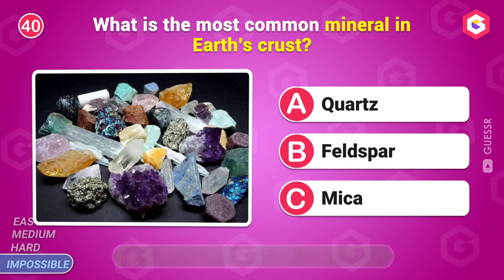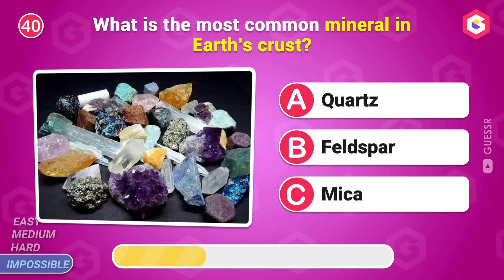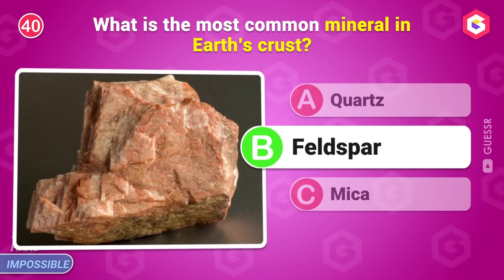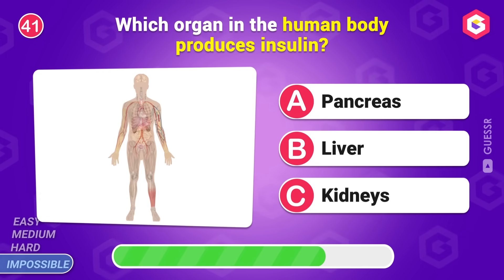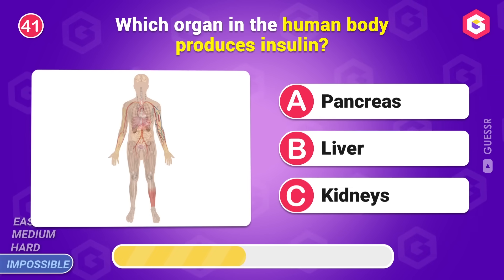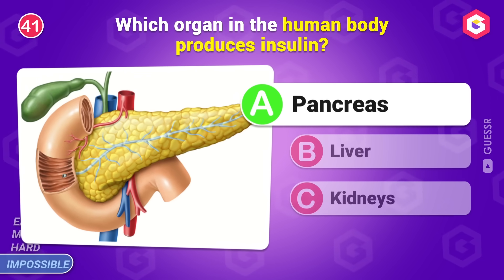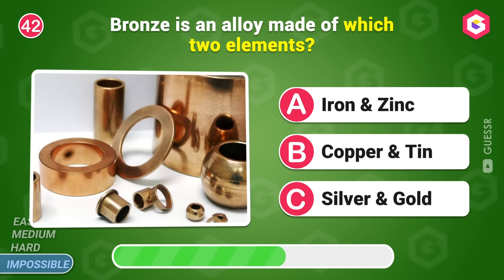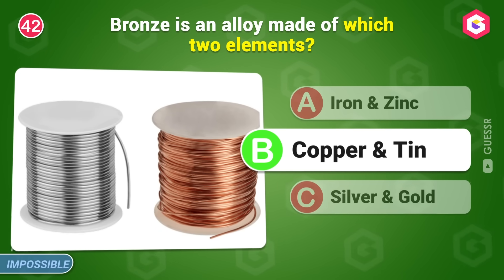What is the most common mineral in Earth's crust? Feldspar. Which organ in the human body produces insulin? Pancreas. Bronze is an alloy made of which two elements? Copper and tin.